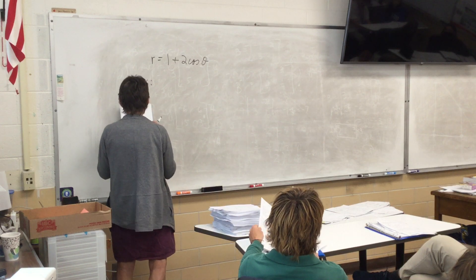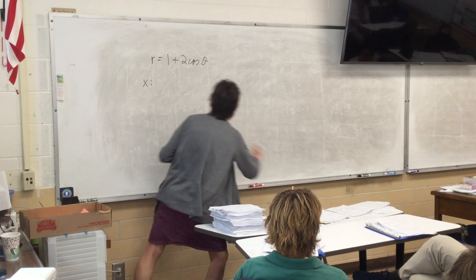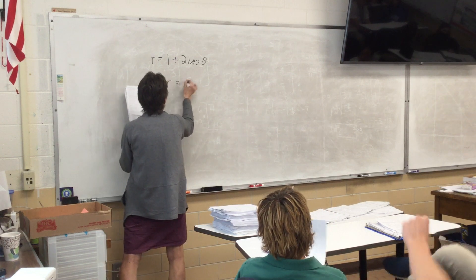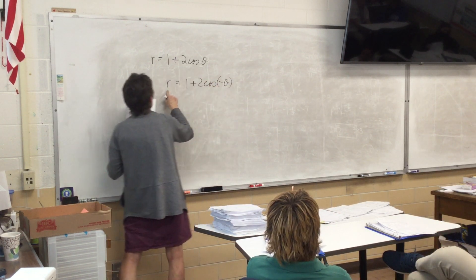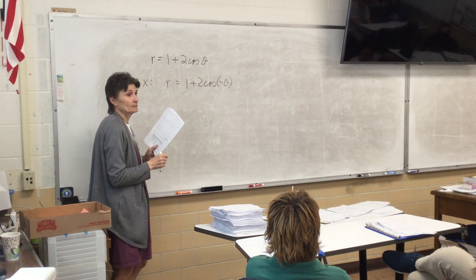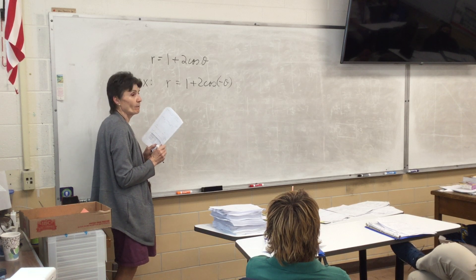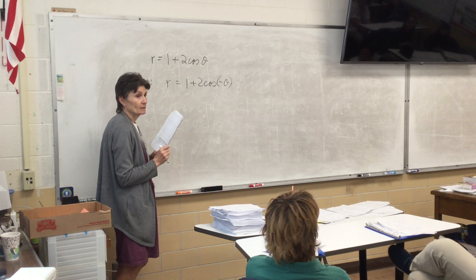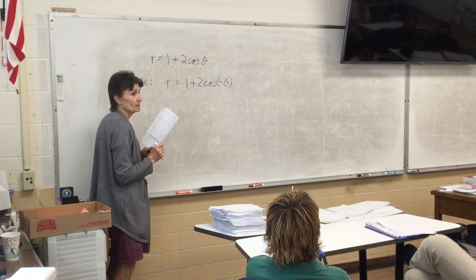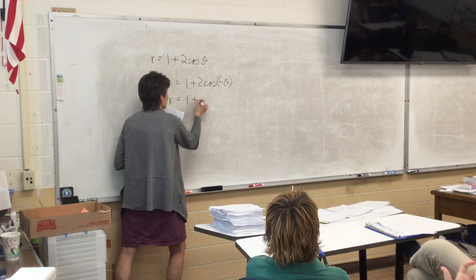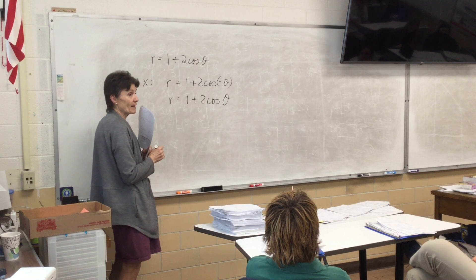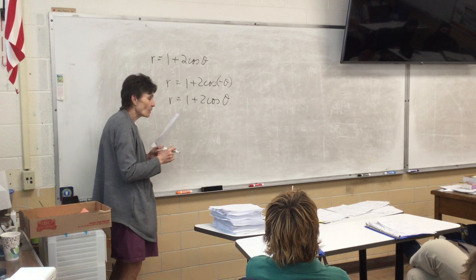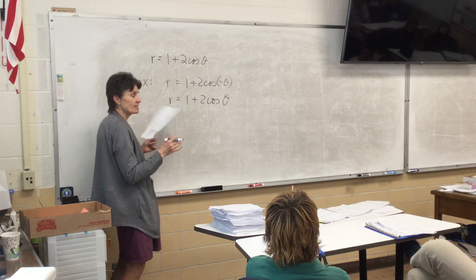Here we go. We're doing a test. This is our equation, and I'm testing it for symmetry about the x-axis. The first test says we replace theta with negative theta. This is a good one to start with — what do I know about cosine? Cosine is even. When you take the cosine of a negative, it just disappears. So this is the same as the original equation. Is this symmetric about the x-axis? Yes. That's a yes, so we're good. We've got symmetry about the x-axis.